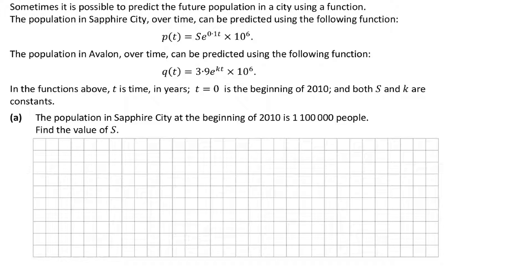The question states that it is sometimes possible to predict future population in a city using a function. The population of Sapphire City over time is predicted using P(T) = S · e^(0.1T) / 10^6. The population of Avalon over time is predicted using Q(T) = 3.9 · e^(KT) / 10^6. T is time in years, T = 0 is the beginning of 2010, and both S and K are constants. Note that the actual exam is very clear that T = 0 in 2010.